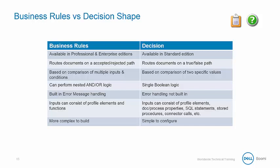Let's recap how business rules differs from a decision shape. The business rules shape offers powerful decision-making logic, so why have a decision shape at all? Often the decision shape is quicker and more efficient to use and uses fewer system resources. The business rules shape is available in professional and enterprise editions, and the decision shape is available in standard editions. Business rules will route documents based on accepted or rejected path, but the decision shape routes documents on a true or false path. Business rules are based on a comparison of multiple inputs and conditions, while the decision shape is based on a comparison of two specific values. Business rules can perform nested AND or OR logic, while the decision shape performs single Boolean logic.